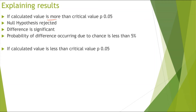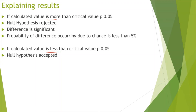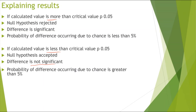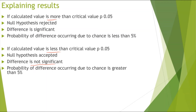However, if the calculated value is less than the critical value, then we can accept the null hypothesis and say that the difference is not significant, and the probability of the difference occurring due to chance is greater than 5%. It just depends on our critical value and calculated value whether we accept or reject the null hypothesis.